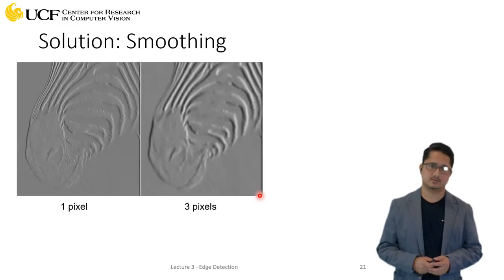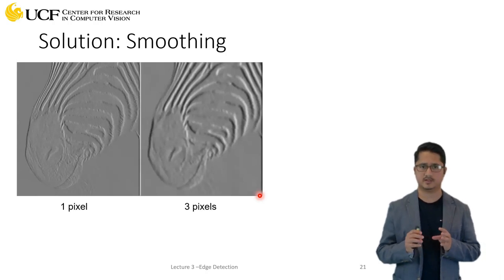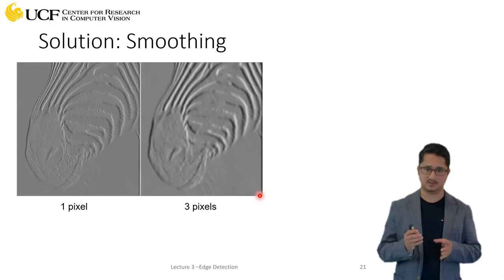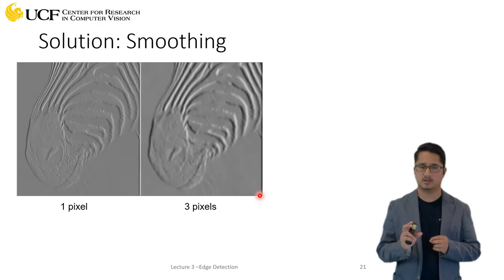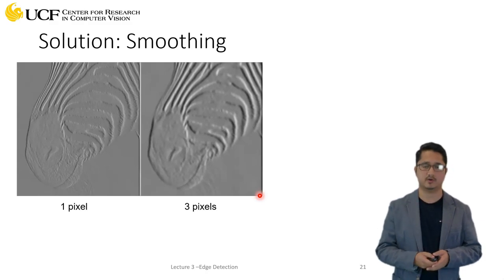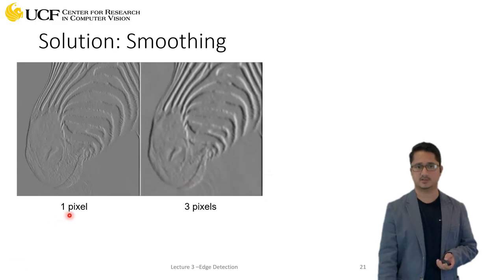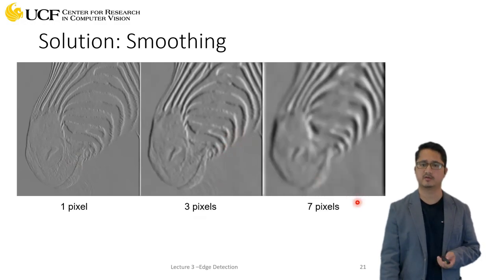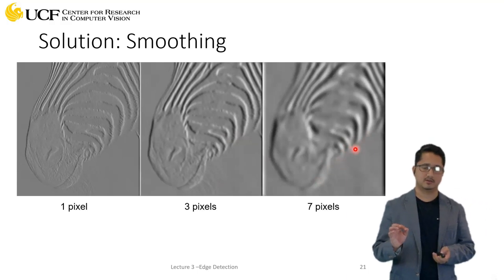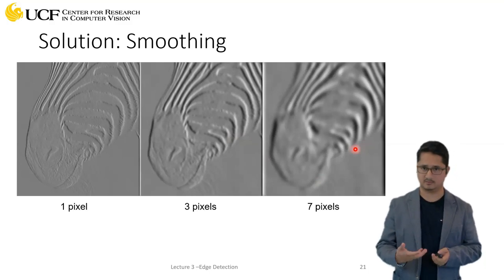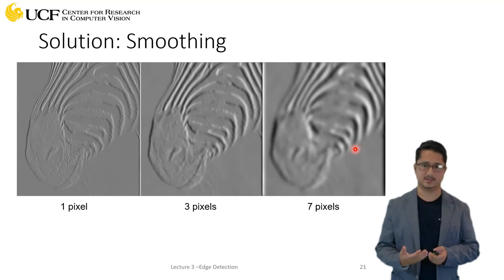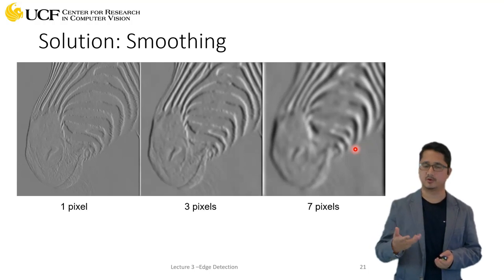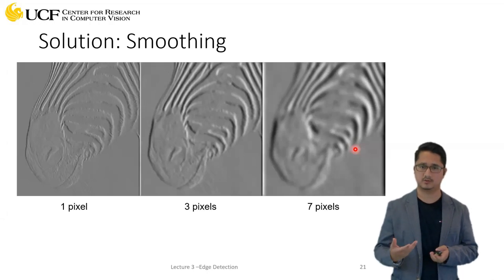It's important to understand that smoothing depends heavily on the filter size. With a kernel of one pixel you're not changing anything; with a three-by-three kernel the edges start to get blurred; increasing the kernel size blurs them further. Too much smoothing removes noise but also loses soft edges. If you want to recover those edges, excessive smoothing may not be a good idea.